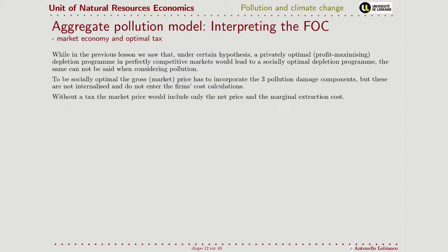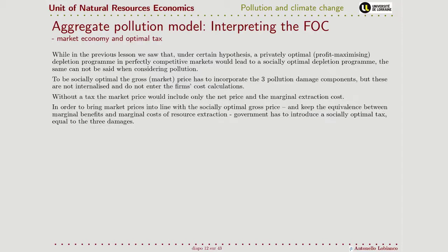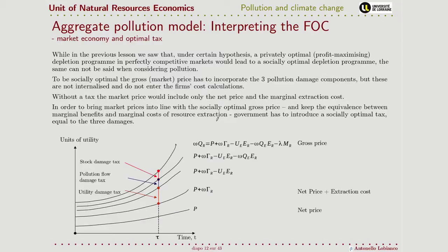The basic idea is that the damage caused by extracting the resource should be taken into account, but the price considered by firms is the market price, which includes only the net price and the marginal extraction cost — that is what firms pay. The damage components are not taken into account. So in order to bring these two things together, a tax is needed that equates the marginal benefits and marginal costs for society.